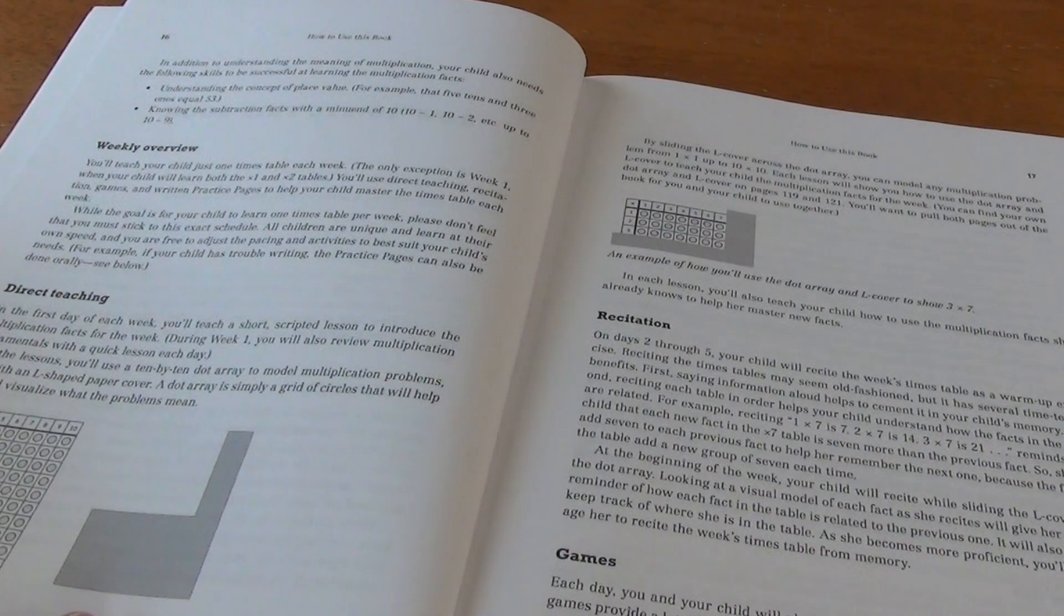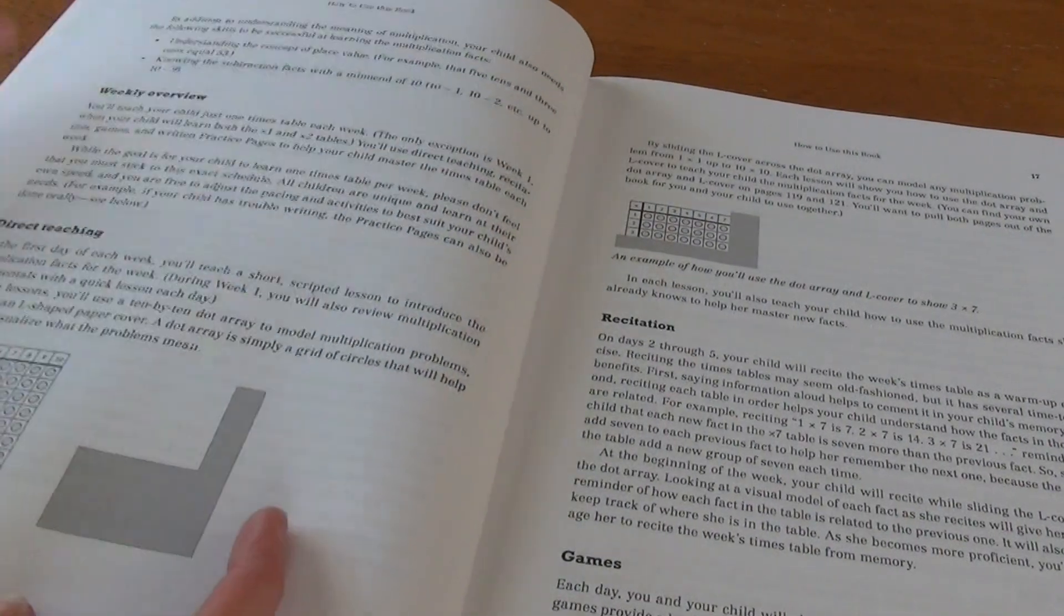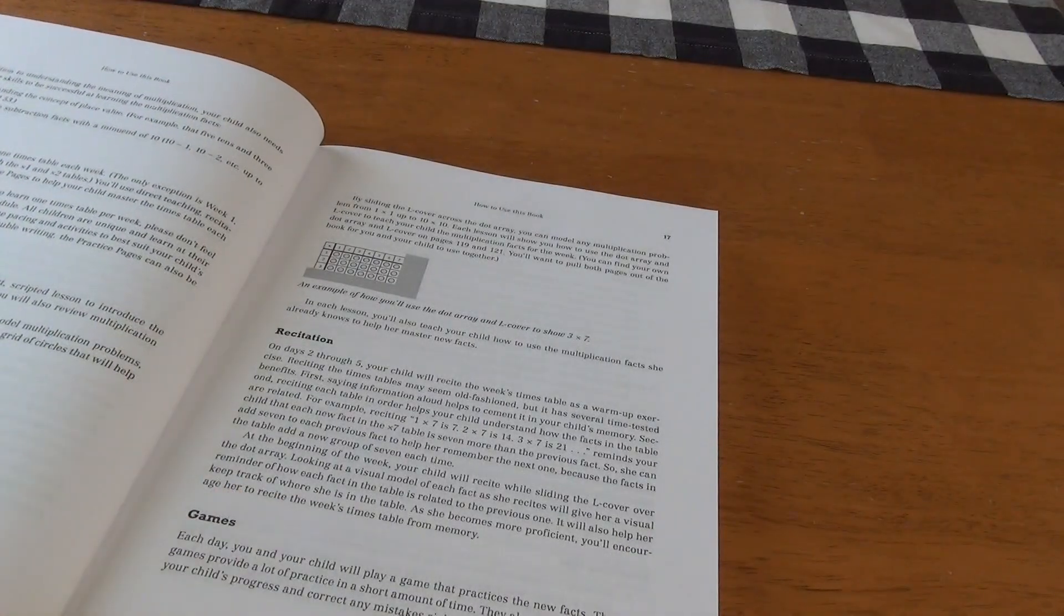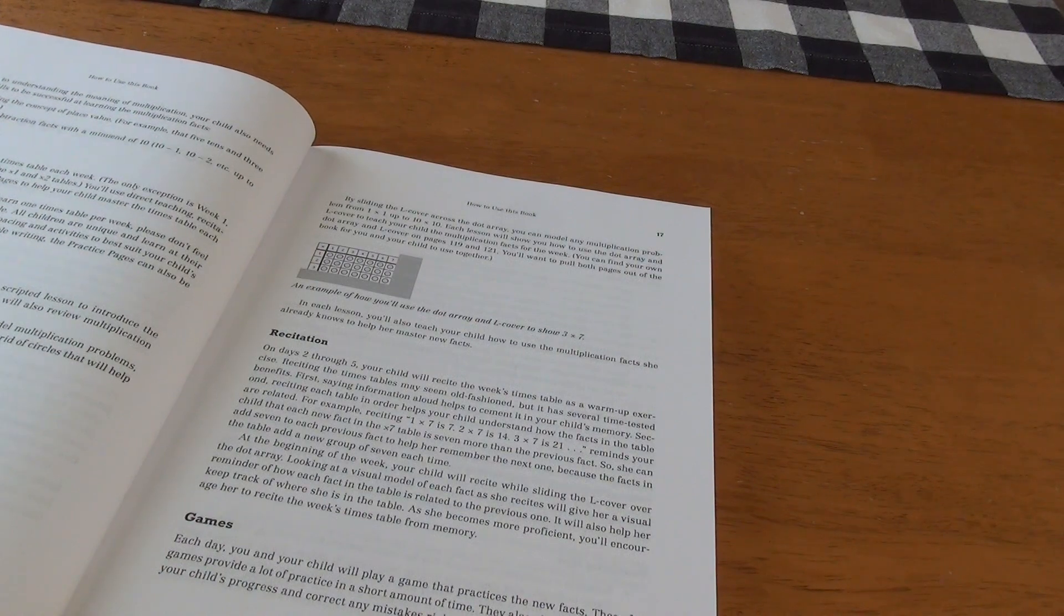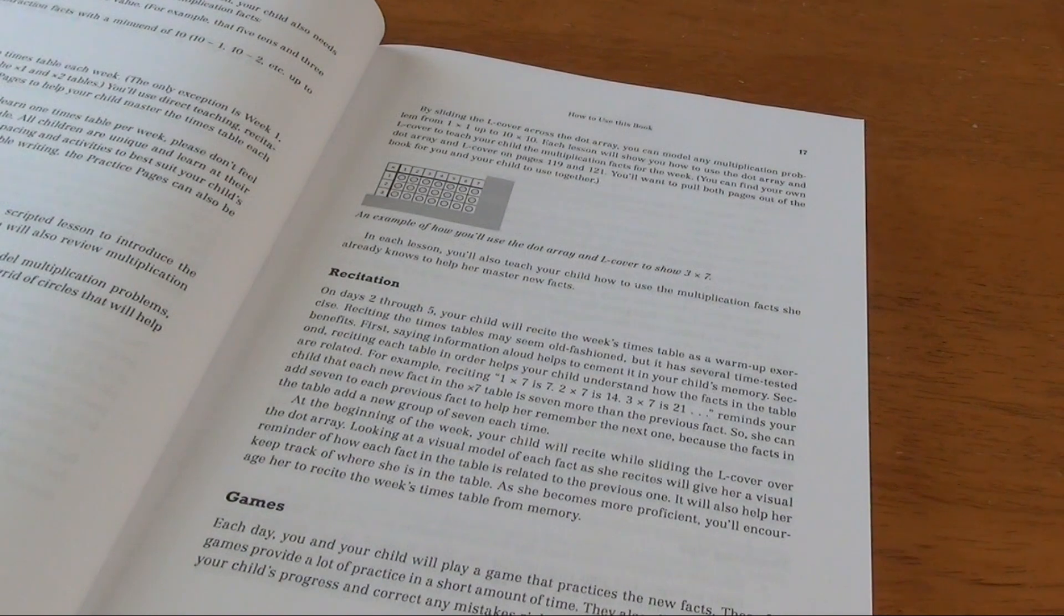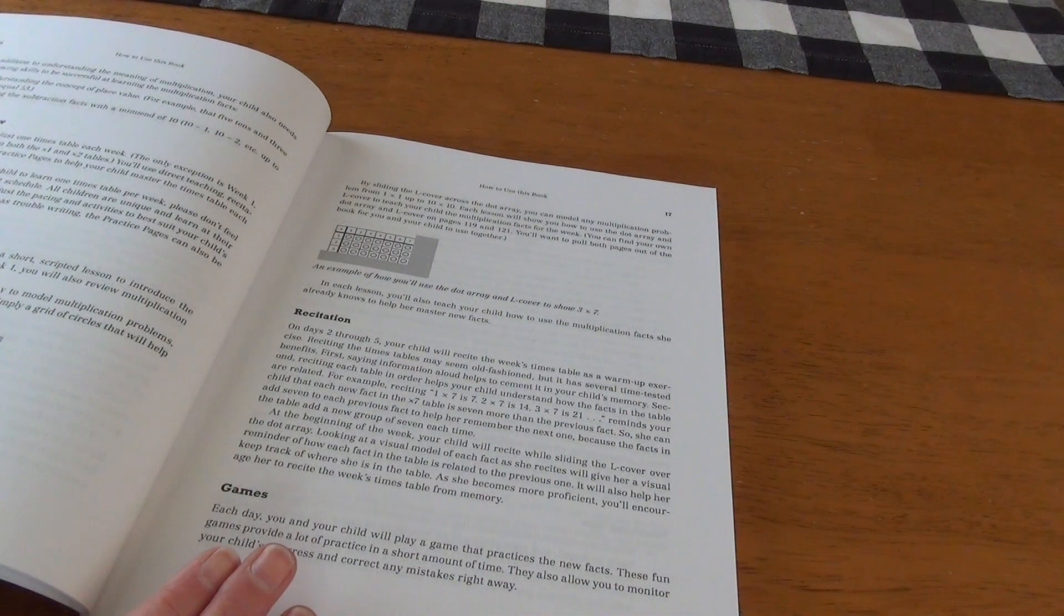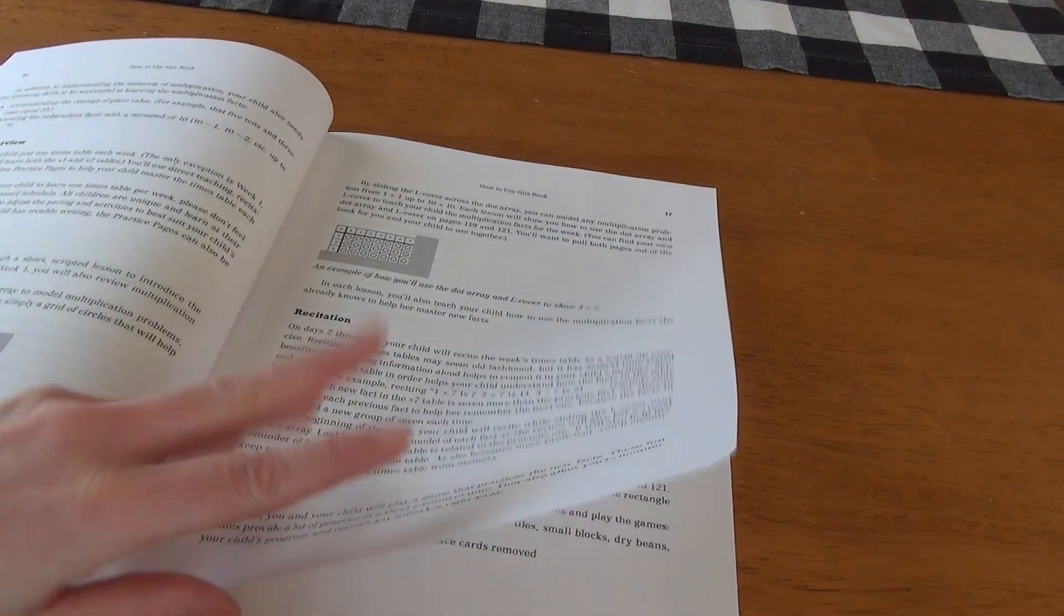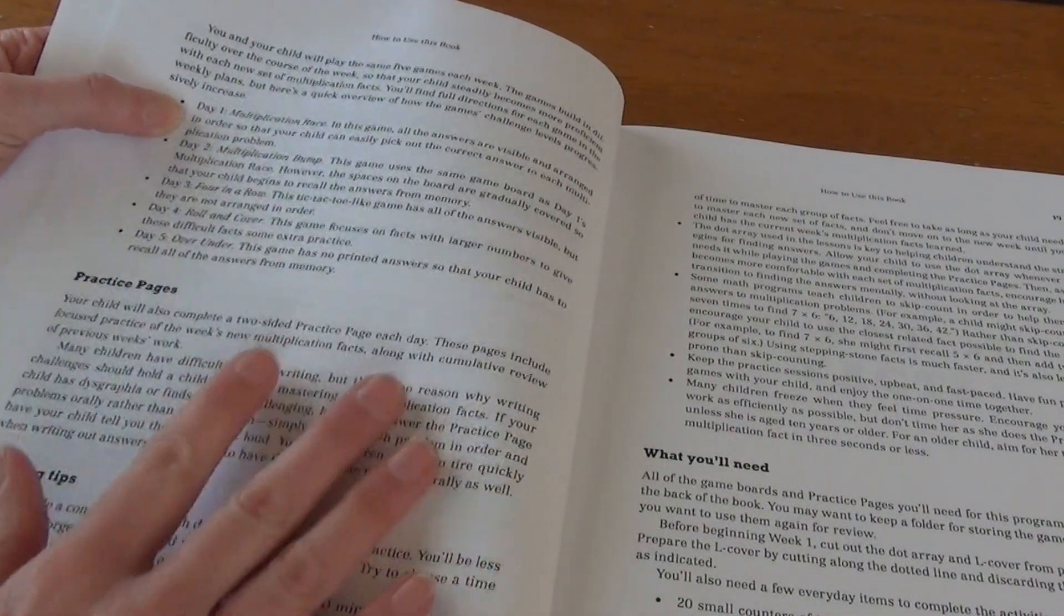On the first day, you have direct teaching where you'll teach a short scripted lesson using the dot array. On days two through five, your child will recite the week's times table as a warm-up exercise. It says that reciting timetables may seem old-fashioned, but it has several time-tested benefits. Then each day, you and your child will get to play a game, which I think is fantastic. Again, the games are included in the back of the book.